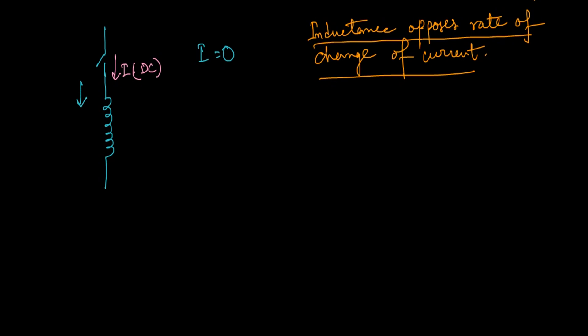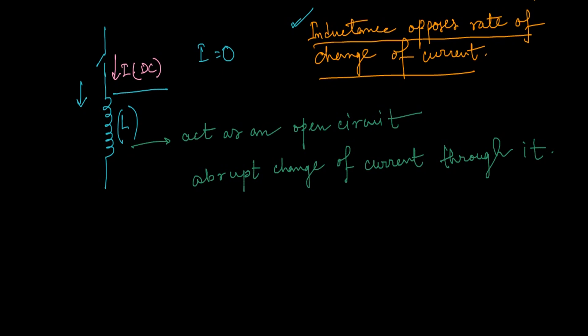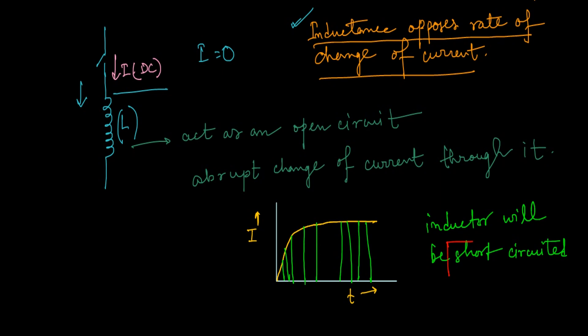This coil has a particular inductance L. This particular inductance will try to oppose this current through this coil, so initially this coil will act as open circuit and will not allow any kind of abrupt change of current through it. But slowly the current will try to increase through this coil. If we look at the graph of inductor charging, then it will be like this: it will initially increase and after some time the current will be constant or the inductor will be short-circuited.